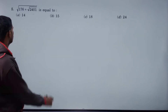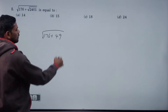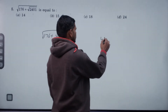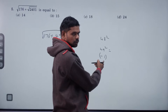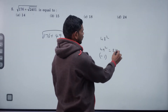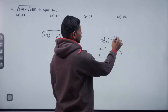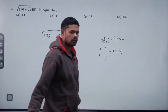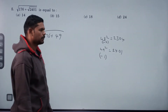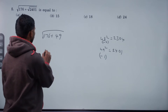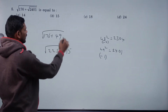Next: square root of 176 plus root of 2401. Root 2401 is 49 squared. So root of 176 plus 49, which is root of 225, value 15.